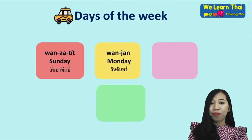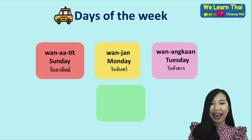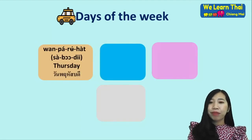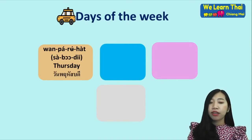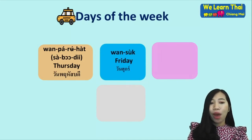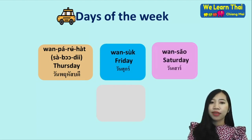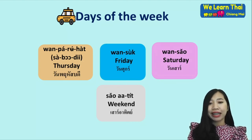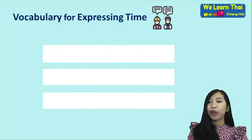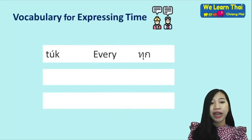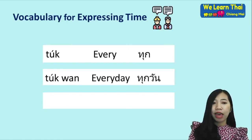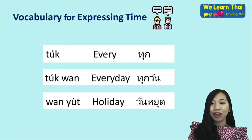For the days of the week: Wan Jan — Monday, Wan Angkhan — Tuesday, Wan Phut — Wednesday, Wan Phruehatsabodii — Thursday, Wan Suk — Friday, Wan Sao — Saturday. The word Sao also means weekend vocabulary. For expressing time, we have the word thuk, which means 'every': thuk wan — every day. We also have wan yut — holiday.